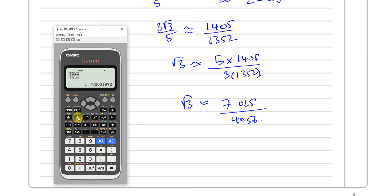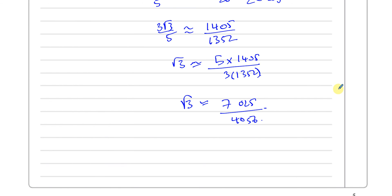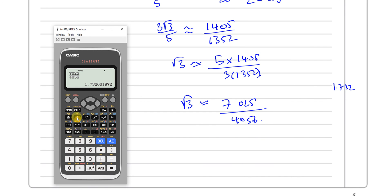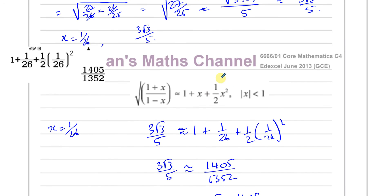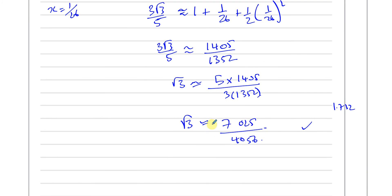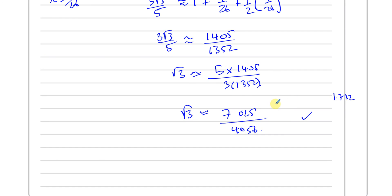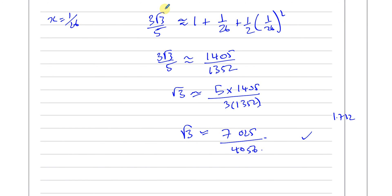To check our answer, converting to a decimal gives approximately 1.732. And the square root of 3 is also 1.732 to four decimal places, confirming our approximation is correct. It's always good to check your answer at the end — if it came out totally different, you'd know something went wrong.